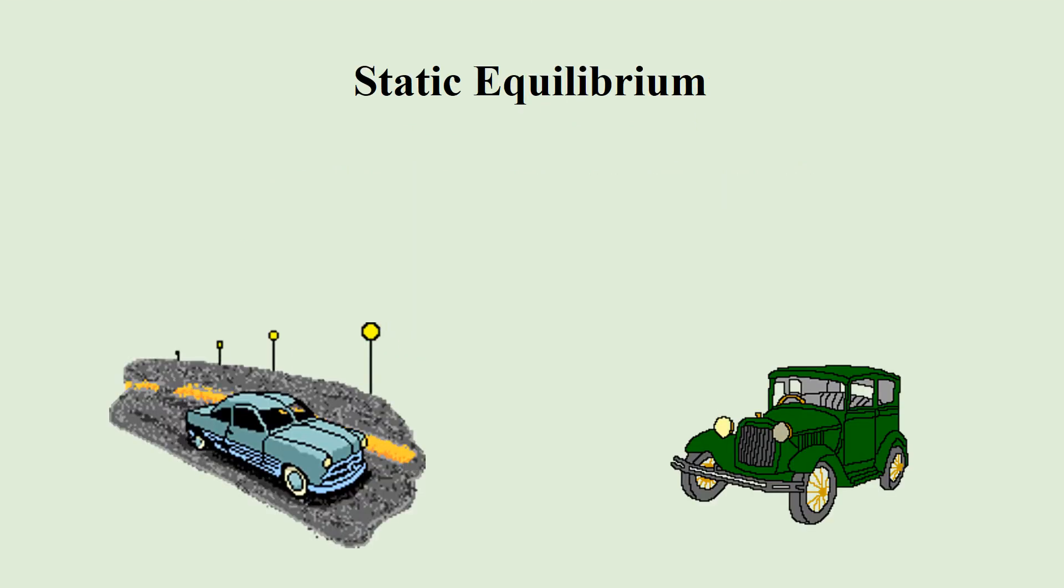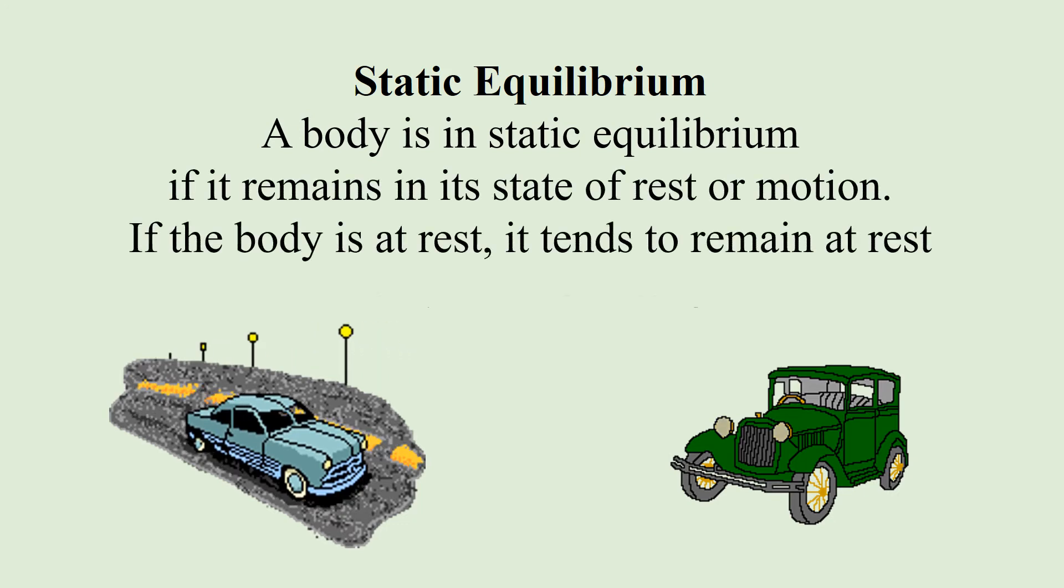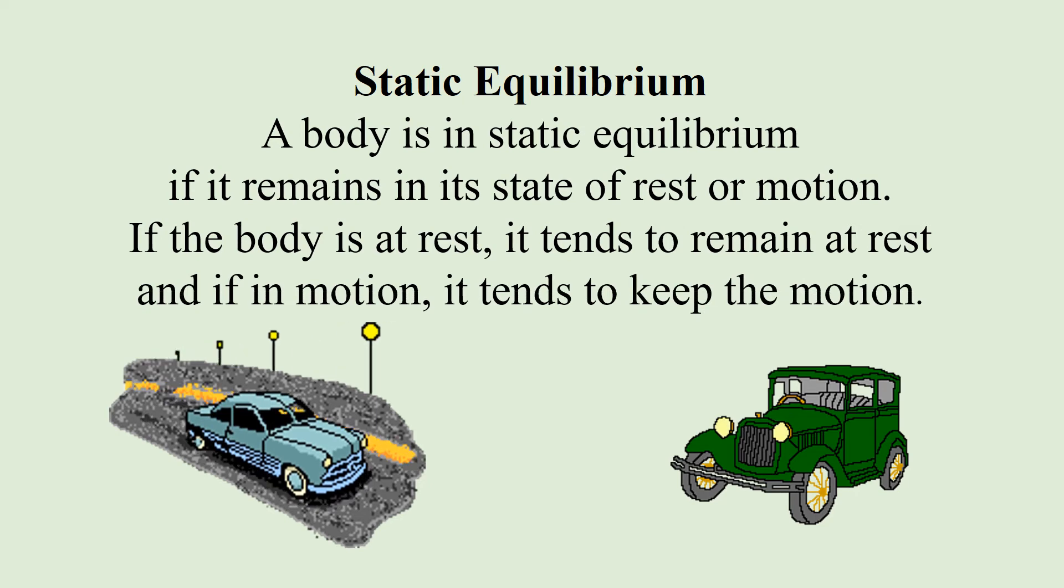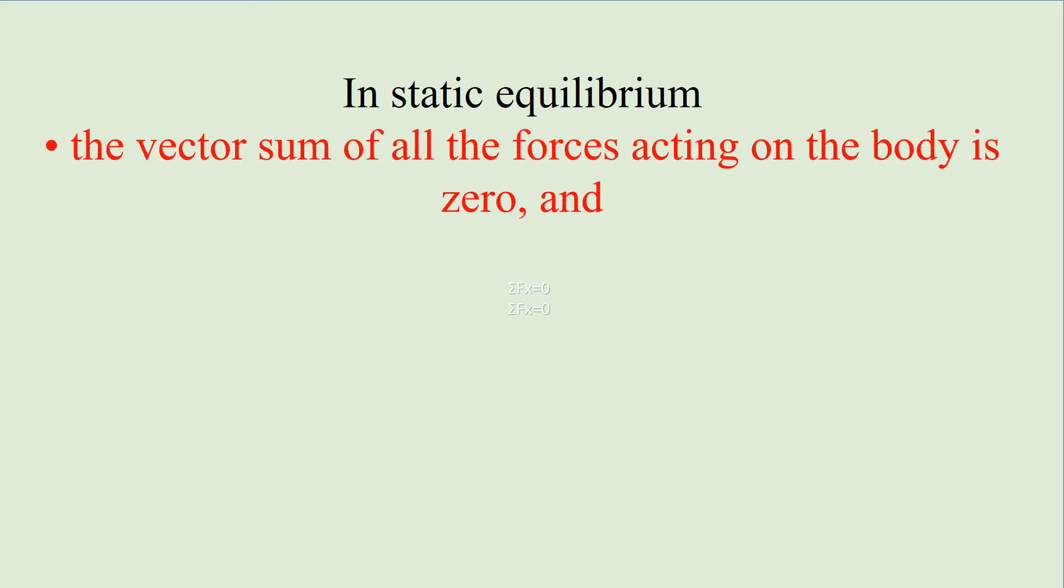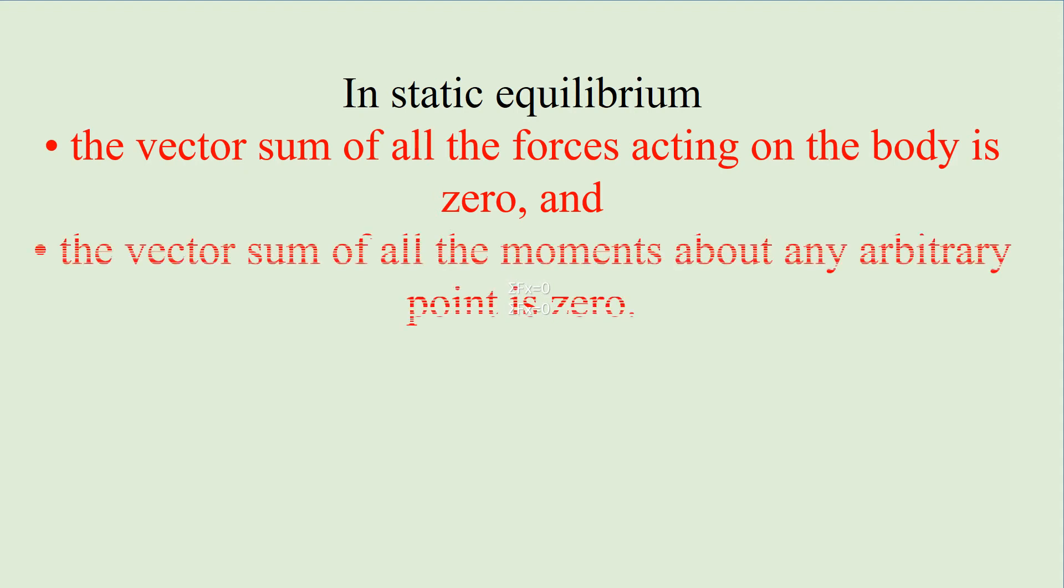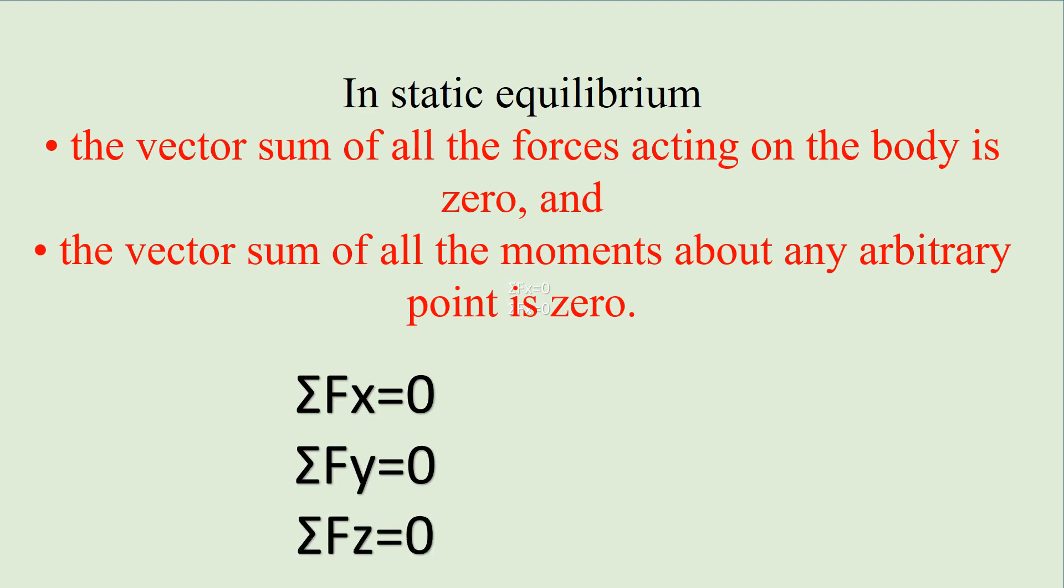After understanding constraint forces and applied forces, we need to understand what is static equilibrium. If a body is at rest it tends to remain at rest, and if in motion it tends to keep the motion in the same way. To check the condition for static equilibrium, we need to check two conditions: first, the vector sum of all forces acting on that body has to be zero, and second, the vector sum of all moments at any arbitrary point must be zero. If these two conditions are satisfied, then the body is in static equilibrium.